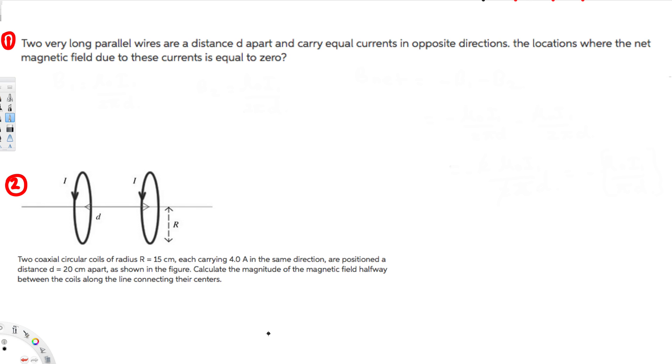Hey, what's going on guys, let's do this problem right here. The first question is asking: two very long parallel wires are distance d apart and carry equal currents in opposite directions. The locations where the net magnetic field due to these currents is equal to what?